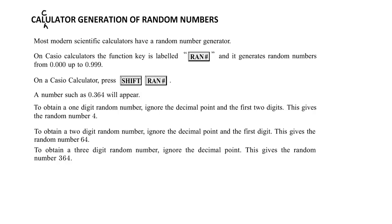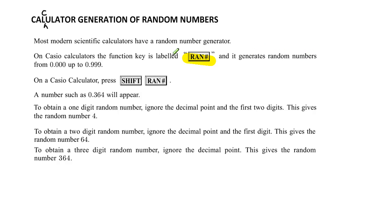The main thing to remember is that there is a button that does this for you. On our Casio calculators it's the button called RAN#. I'll show you this with a picture of the calculator in a moment. That's the one that generates random numbers and they go from 0.000 to 0.999. So you need to press Shift and RAN#.